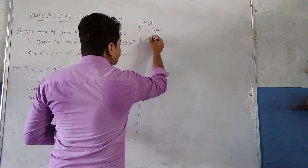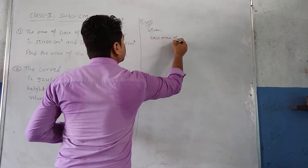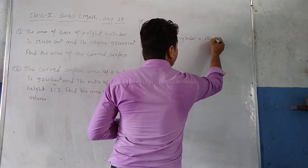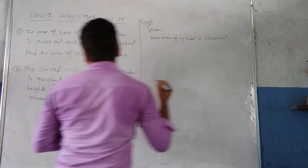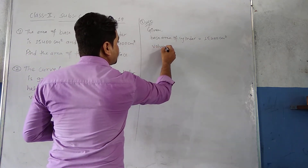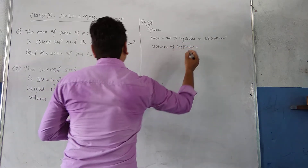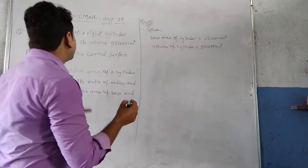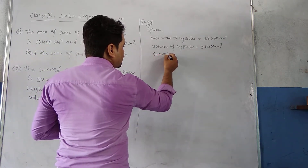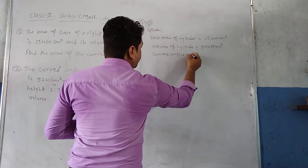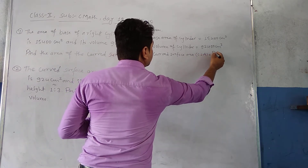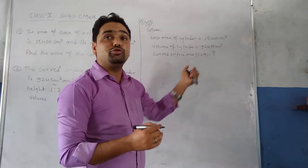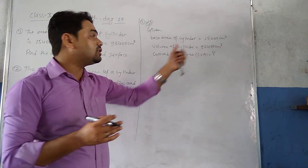Given: base area of cylinder = 15400 cm². Volume of cylinder = 92400 cm³. We need to find the curved surface area (CSA). From the base area we can find r, and then by applying the volume we can find h, and if we know r and h then we can easily find the CSA.